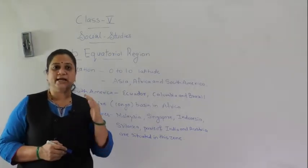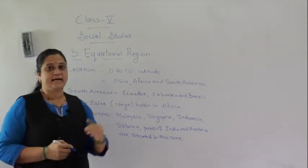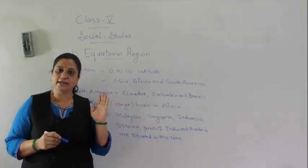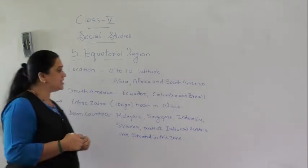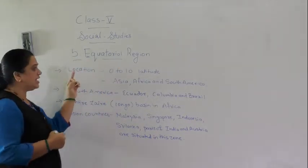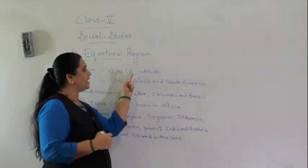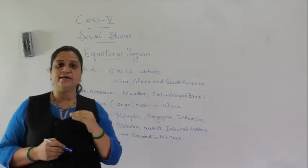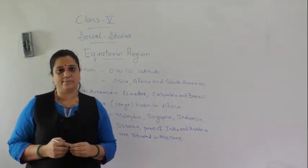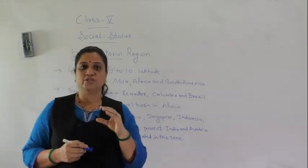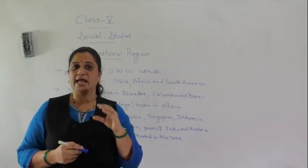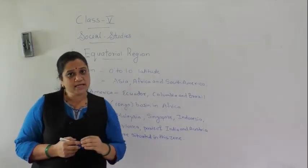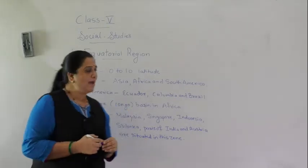The name of the lesson itself tells us that we are going to study about the region which lies near the torrid zone. The equatorial forest lies between 0 degrees to 10 degrees latitude in the north and 0 degrees to 10 degrees latitude in the southern hemisphere. This is the area near the equator — the torrid zone — which receives the direct rays of the sun.